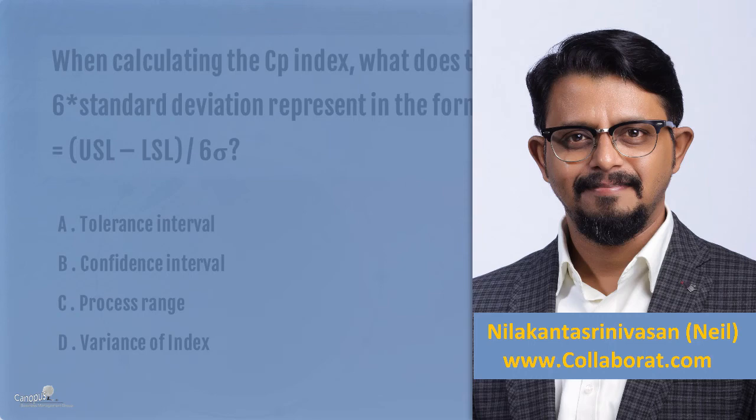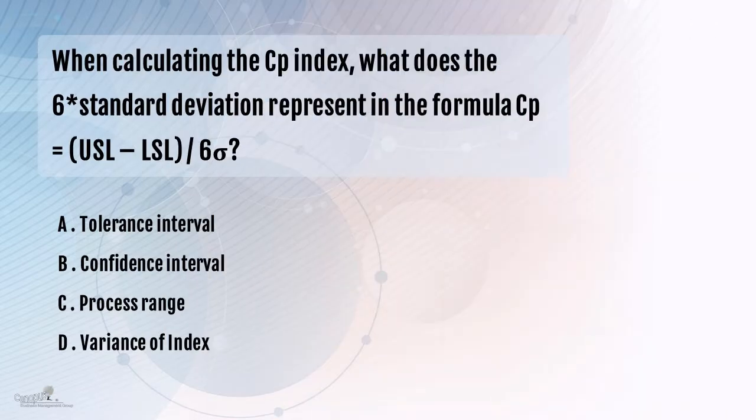This question relates to process capability. When calculating the Cp index, what does 6 times the standard deviation represent in the formula Cp equals USL minus LSL divided by 6 times the standard deviation?